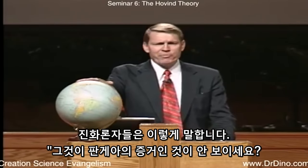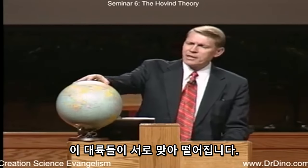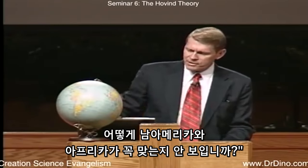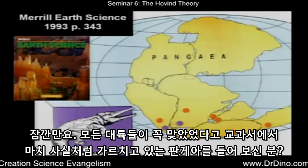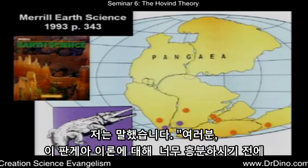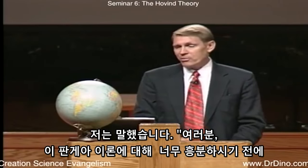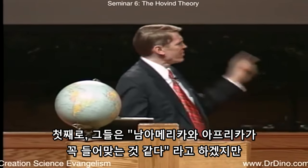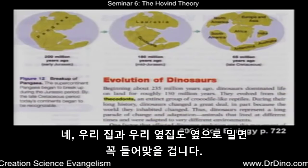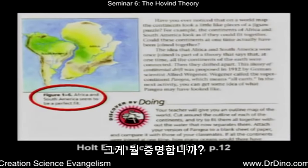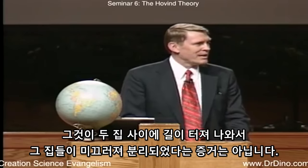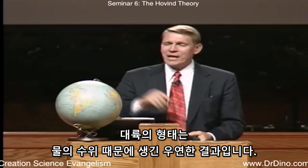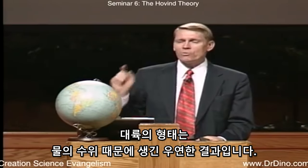Evolutionists say, 'Don't you see that's proof of Pangea? These continents fit together — South America and Africa seem to fit.' But wait: my house and the neighbor's house would fit too if you slid them together. What does that prove? Nothing. It doesn't prove the street oozed up in between them and the houses slid apart. The shape of these continents is a pure coincidence based upon the water level. They'll also say similar fossils are found on opposite sides of the ocean — but those same fossils are found literally all over the world, which is just as much evidence of a worldwide flood.